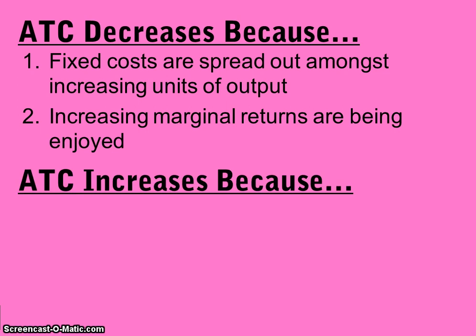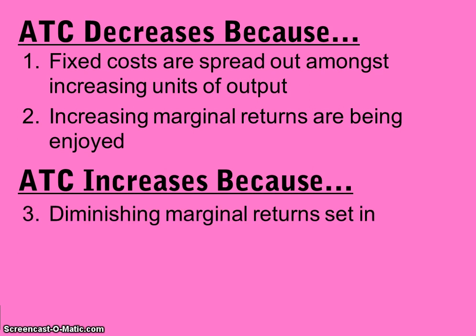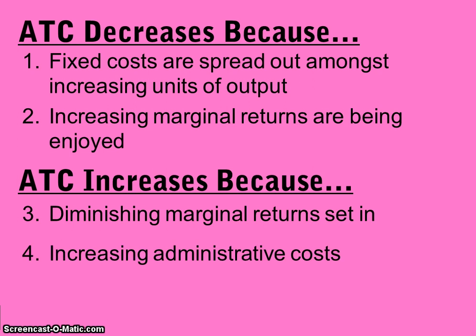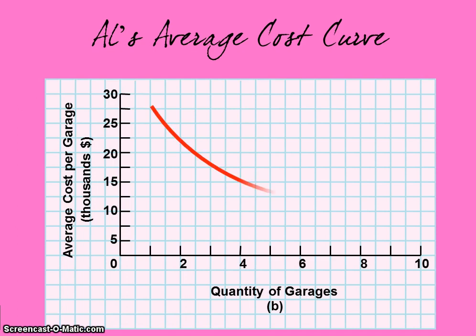Then we hit a point where average total cost begins to increase — the upward-sloping portion of the U-shaped curve. The two reasons for the increasing portion are: diminishing marginal returns set in, so your inputs are adding less and less to total output, driving average total cost up. And when companies become big and production levels become high, there are increasing administrative costs that go along with running a large business. So those are the four reasons for the U-shaped average total cost curve.